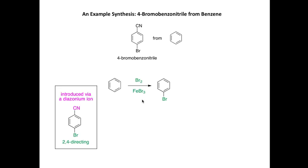In the first step, I'm going to brominate benzene using bromine, iron, 3-bromide. Here's bromobenzene. The second step, I'm going to nitrate bromobenzene using a mixture of nitric and sulfuric acid.